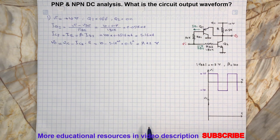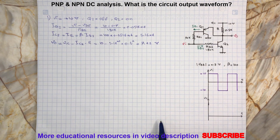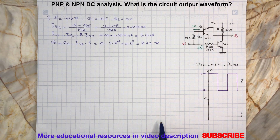Now we consider VI equals negative 10V. In this case, transistor Q2 is reverse biased, so it will turn off and there is no current at its collector.